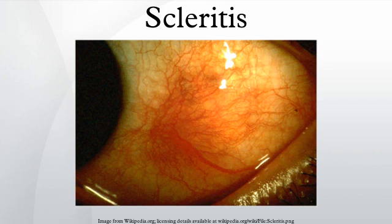Ancillary tests such as CT scans, MRIs, and ultrasonographies can be helpful, but do not replace the physical examination. In very severe cases of necrotizing scleritis, eye surgery must be performed to repair damaged corneal tissue in the eye and preserve the patient's vision.